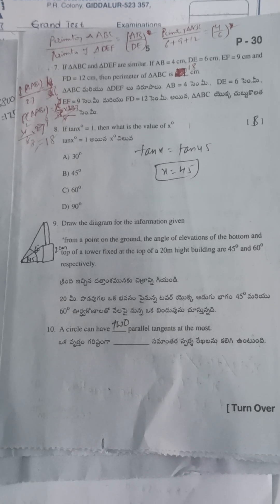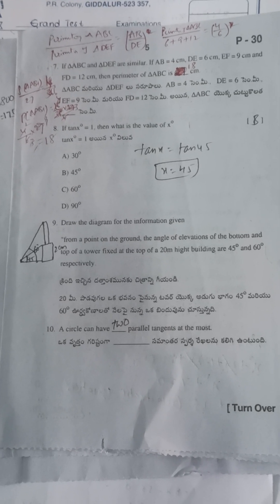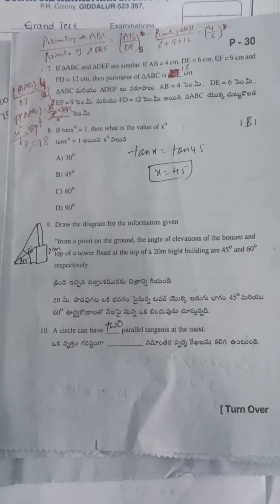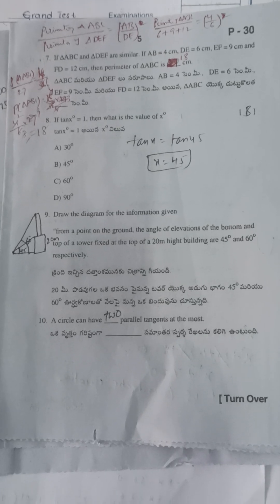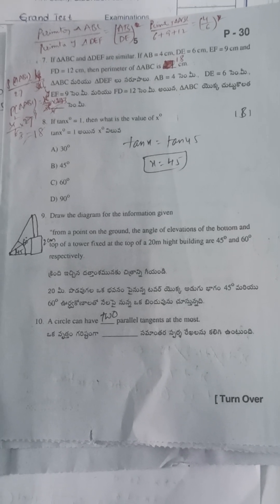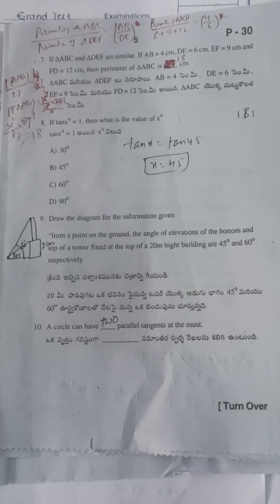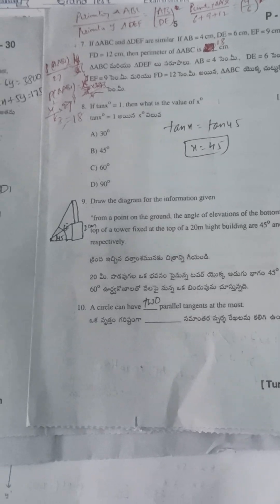Eighth question: if tan x = 1, then the value of x is. We know tan 45° = 1, so tan x = tan 45°, which gives x = 45°.